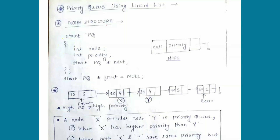Hello everyone, welcome back to my channel. For today's session we will see how to implement the priority queue using a linked list. In a priority queue, every data is associated with a priority. When you want to insert a node into a priority queue, we need to check the priority of other nodes and accordingly insert it. When you want to delete a data or perform the dequeue operation, we remove the highest priority node.